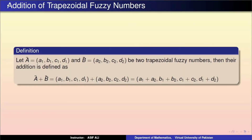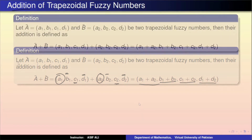Dear students, topic is addition of two trapezoidal fuzzy numbers. A tilde = (a1, b1, c1, d1) and B tilde = (a2, b2, c2, d2) are trapezoidal fuzzy numbers. Then their addition is defined as A tilde plus B tilde = (a1, b1, c1, d1) + (a2, b2, c2, d2) = (a1+a2, b1+b2, c1+c2, d1+d2)۔